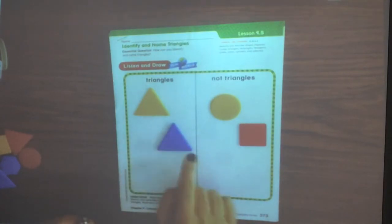Here is a triangle. One, two, three sides. One, two, three vertices.